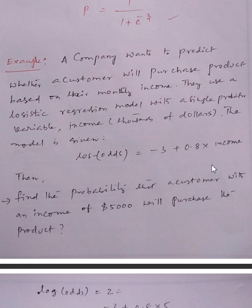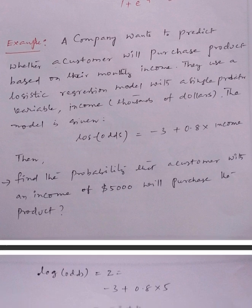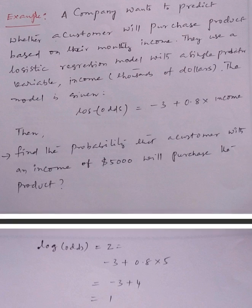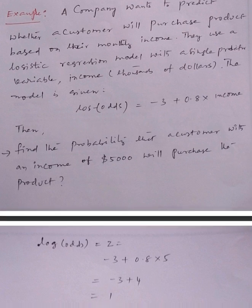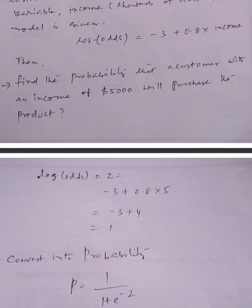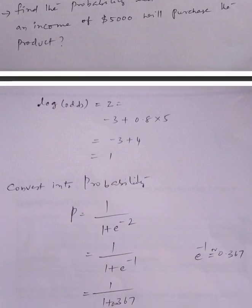This equation will be provided in the question. Find the probability that a customer with an income of $5,000 will purchase the product. We need to calculate what percentage probability exists if the person's monthly income is $5,000.